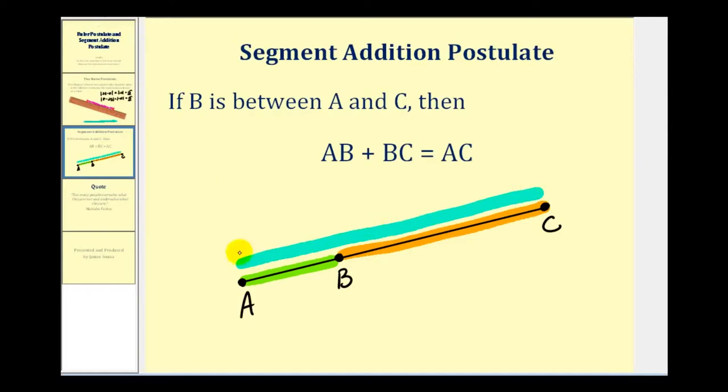Looking at it numerically, if we know the segment AC has a length of, let's say, fifteen centimeters, and we place the point B between points A and C on the segment, the length of segment AB would be four, and the length of segment BC would be eleven.